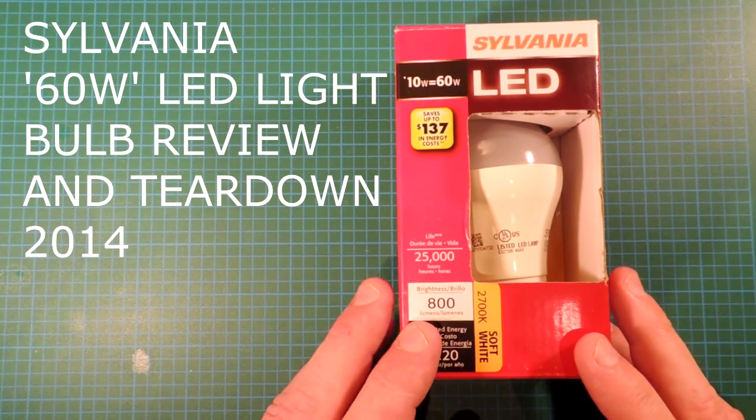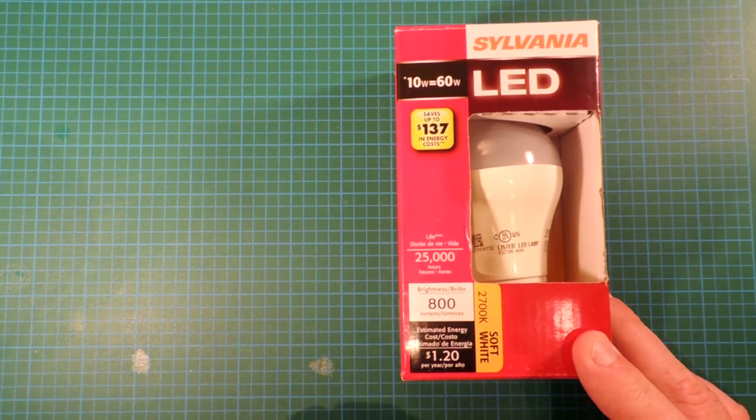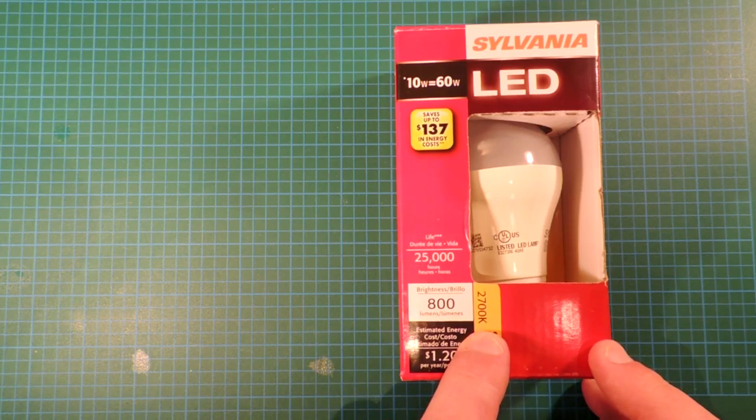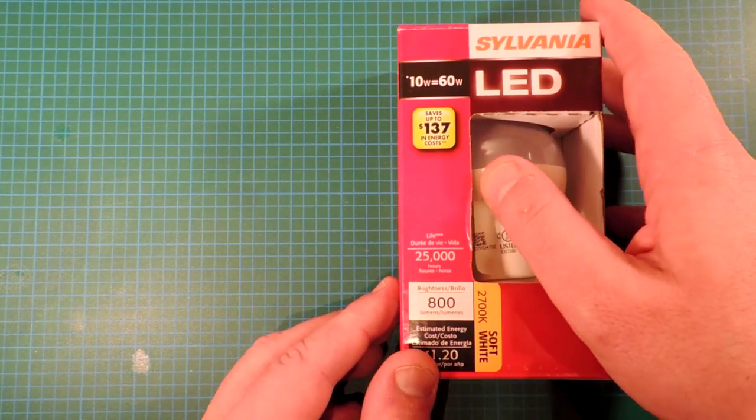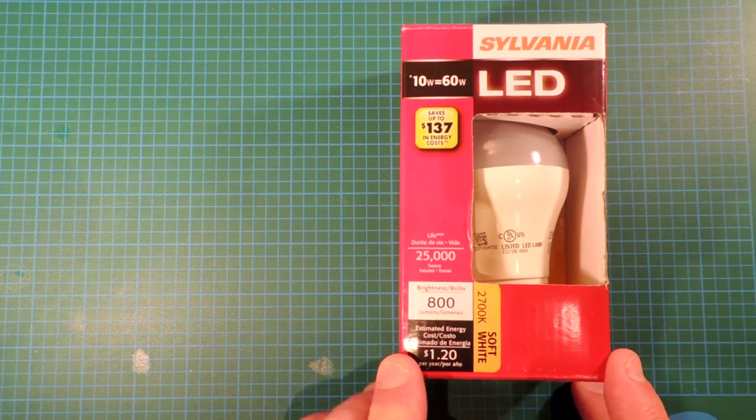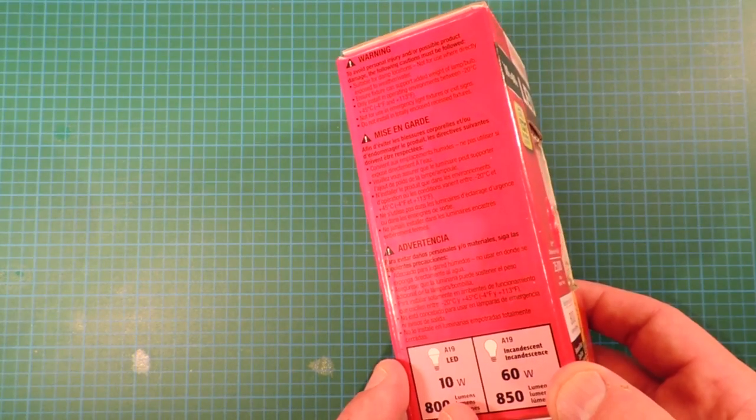Okay, review and teardown time. This is an LED light bulb from Sylvania. It's a 60 watt equivalency, produces 800 lumens, which is class competitive in 2014. 2700 Kelvin, which of course is a soft white or warm white, emulating the color of an incandescent light bulb. We will review it for performance and then we'll tear it apart.